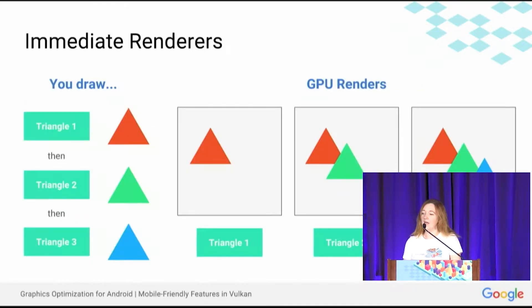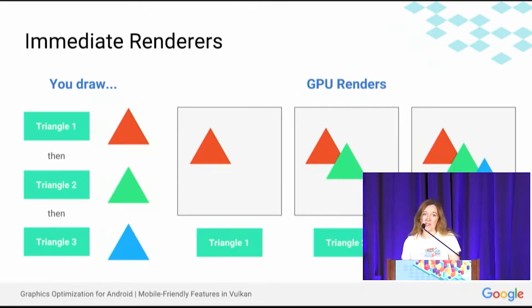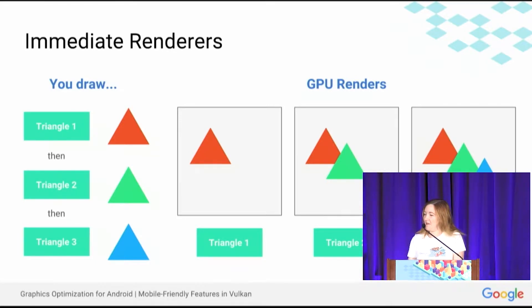So if you're familiar with desktop rendering, you may know more about immediate renderers. Those work in a fairly straightforward manner. You describe your scene as a series of draw calls — draw me triangle one, two, three — and the GPU receives these draw calls and executes them as they're received, committing each one out to the frame buffer. So your scene builds up one draw call at a time.